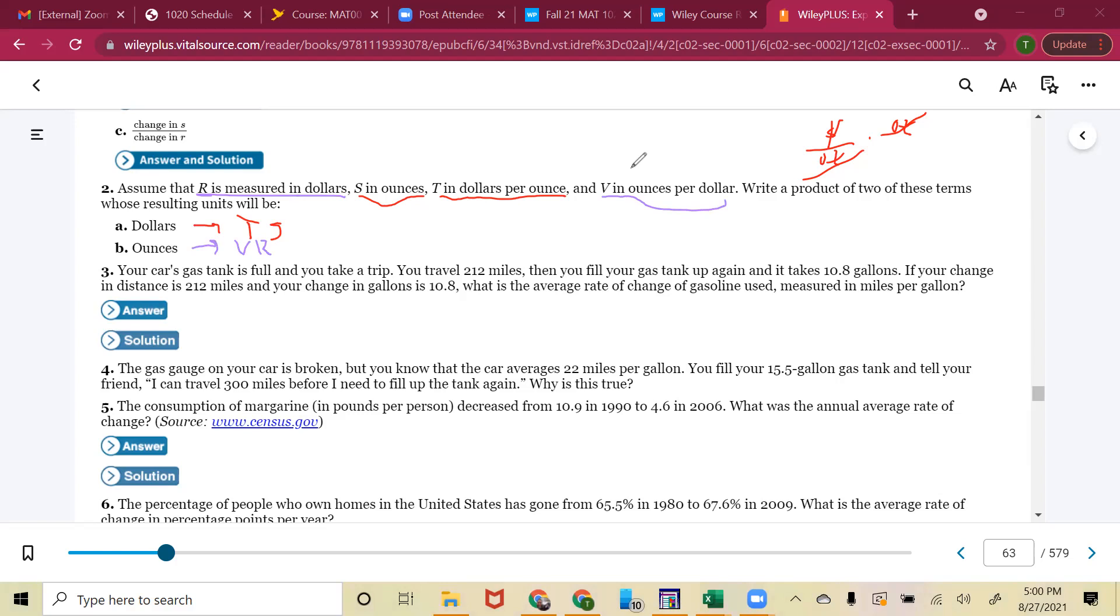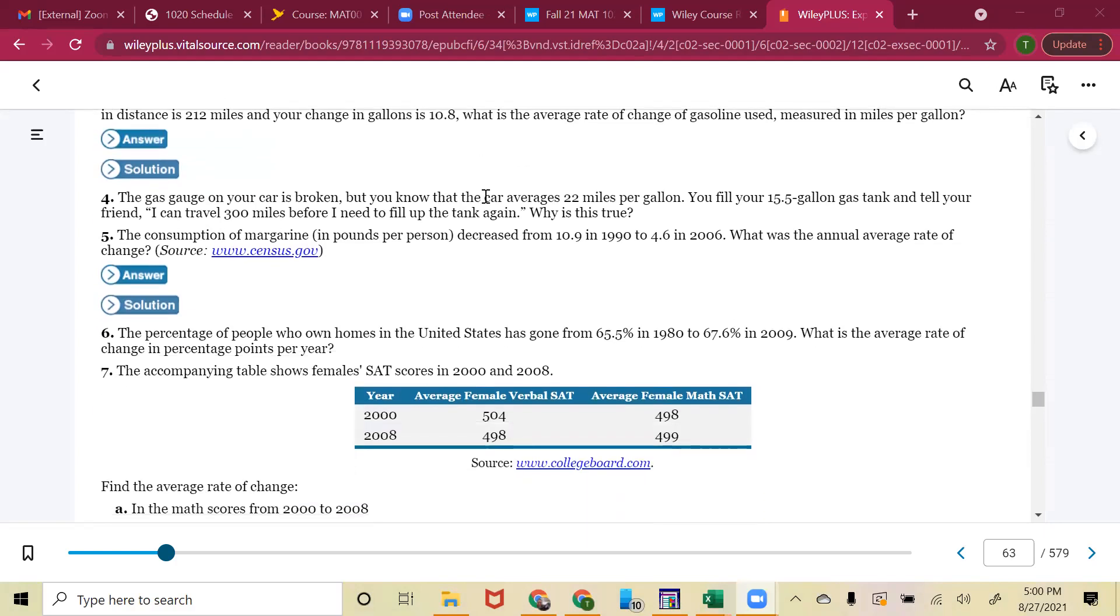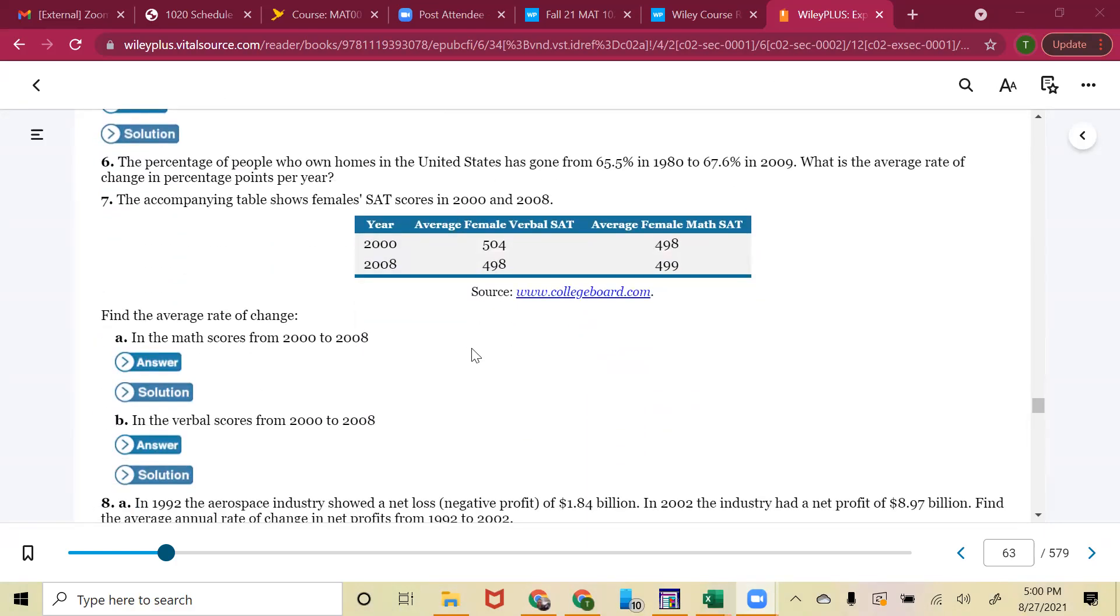Okay, let's look at number six. Number six, the percentage of people who own homes in the United States has gone from 65.5% in 1980 to 67.6% in 2009. What is the average rate of change in percentage points per year? So they're telling me how my percentages have changed. They've kind of done that for me.